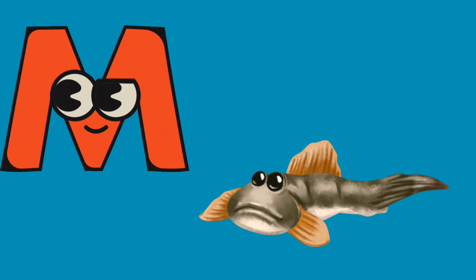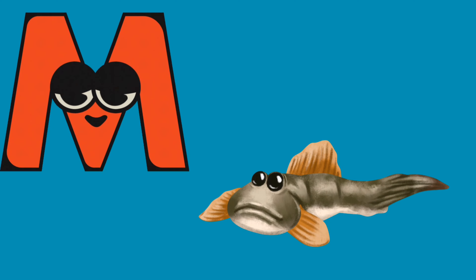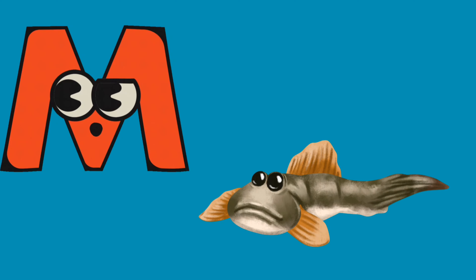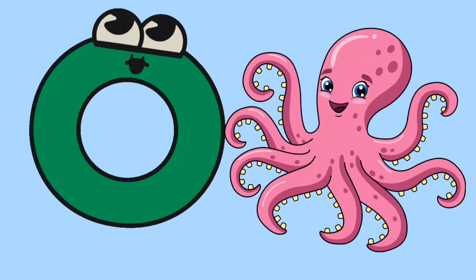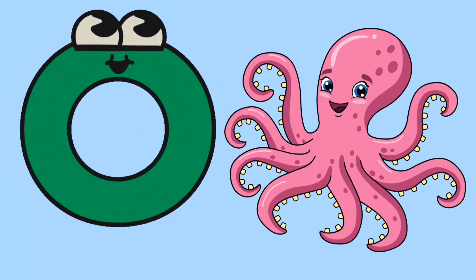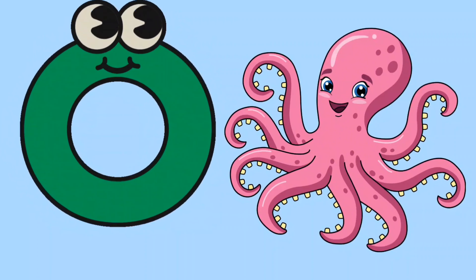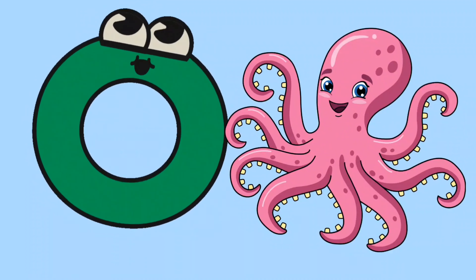J is for jellyfish. J is for jellyfish. K is for king crab. K is for king crab. L is for lobster. L is for lobster.